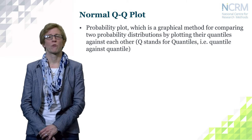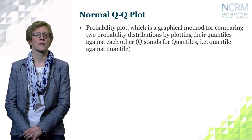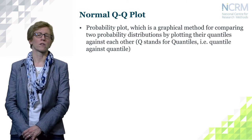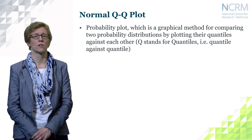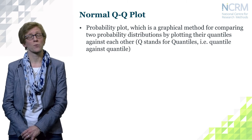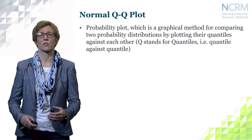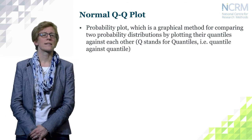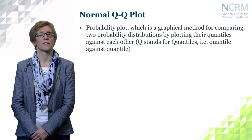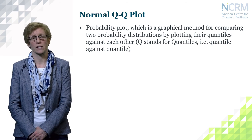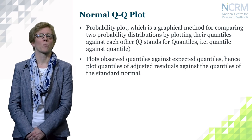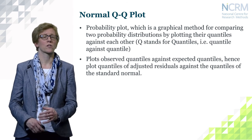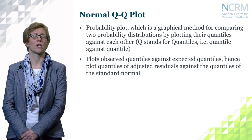Another way of looking at residuals is through normal QQ plots — probability plots that plot the quantiles of one distribution against the quantiles of another. Here we compare the distribution of the observed adjusted residuals with the expected residuals from a normal distribution. QQ stands for quantile-quantile plots. We plot the observed quantiles of adjusted residuals against the quantiles of the standard normal.